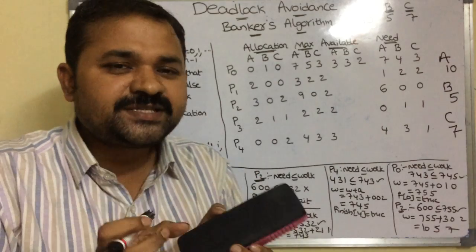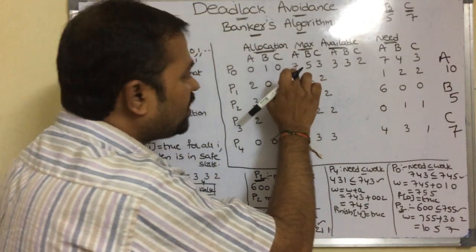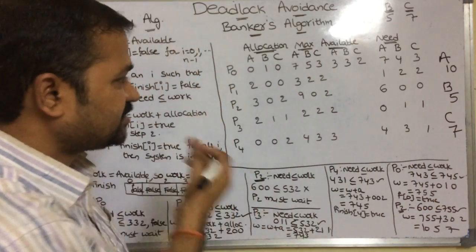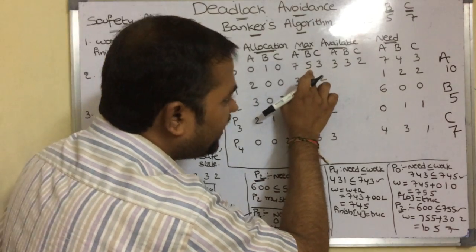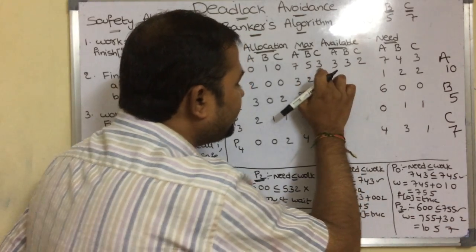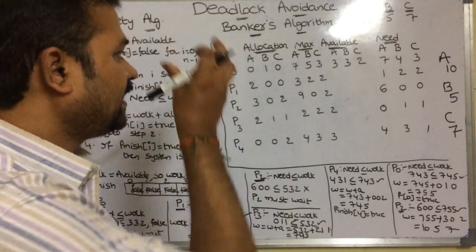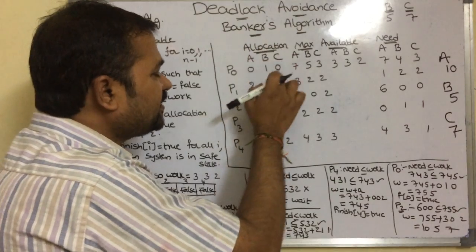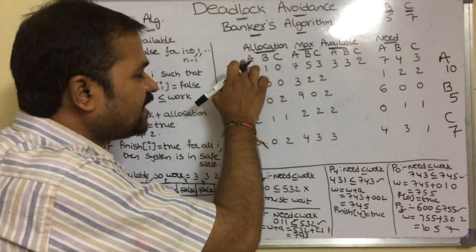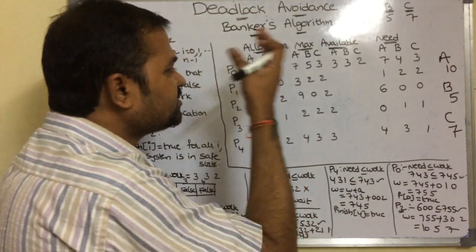Each process must specify what is the maximum need of each resource type. For P0, for resource type A the maximum need is 7 — out of 10 instances it requires 7. For resource type B, the maximum demand is 5 — out of 5 it requires 5. For C, the maximum demand is 3 — out of 7 it requires 3. The Allocation matrix specifies how many resources are currently allocated to each process. For P0: 0 resources for A, 1 for B, and 0 for C.